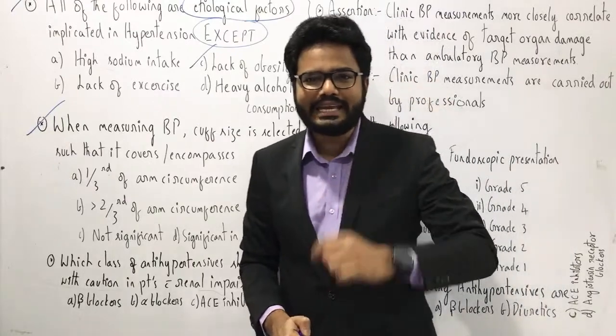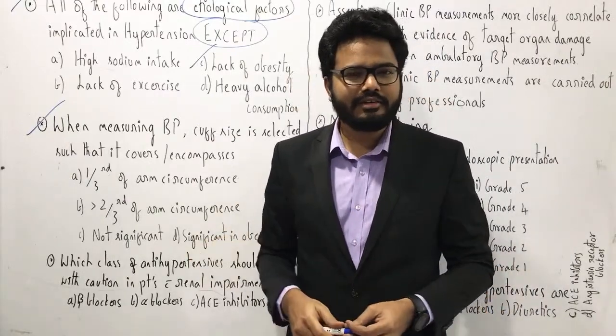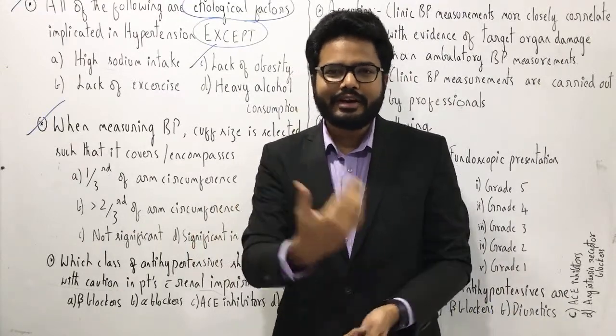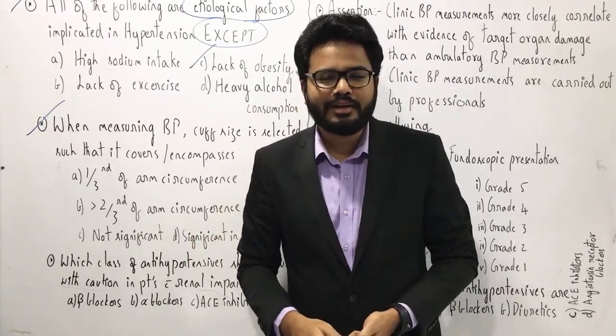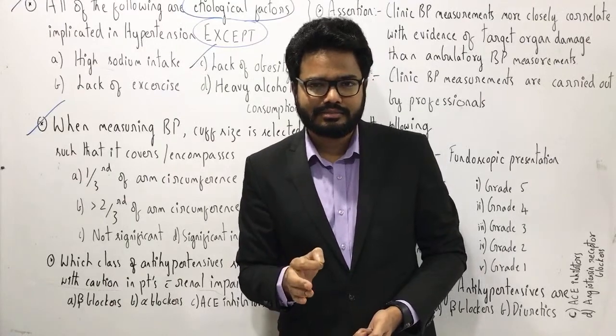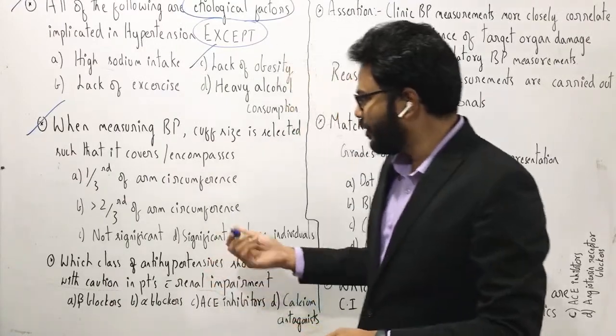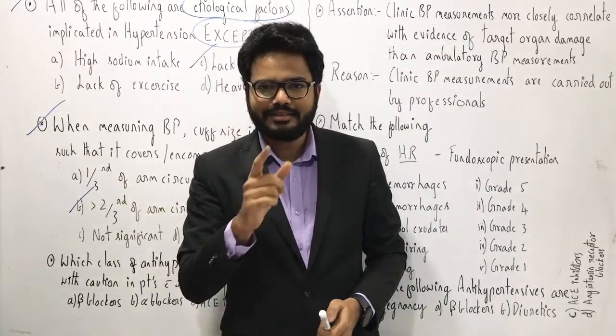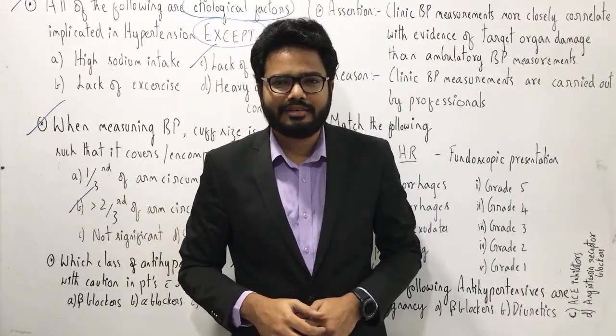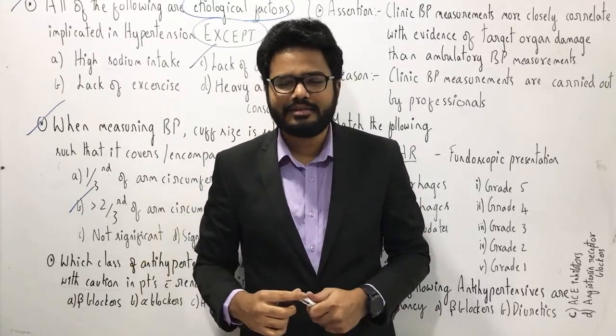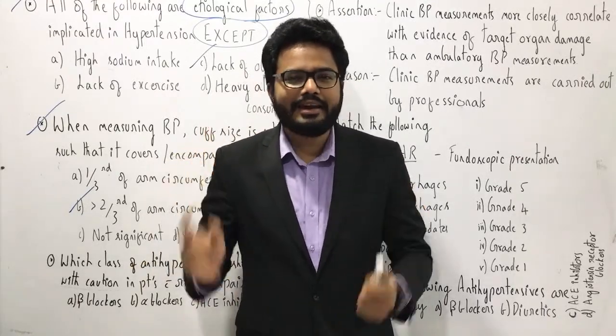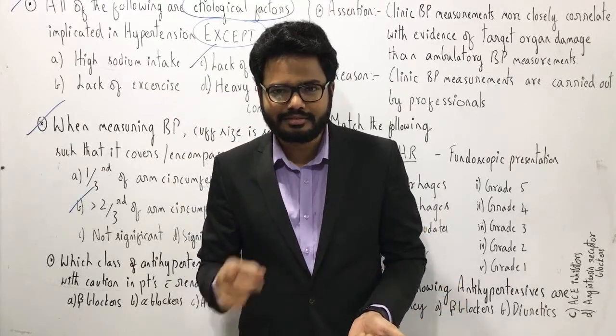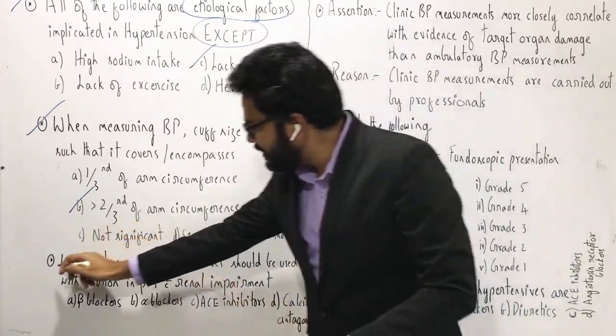It can be obese or non-obese individual, but the criteria is very important. The circumference, covering or encompassing the circumference of the arm, more than two-thirds. So consider this very, very important. As I said at the beginning of this session, I'm throwing this as a challenge. You're not going to make any mistake, provided you had attended all these textbook discussions.